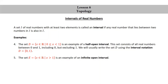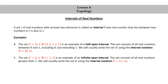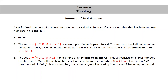The set E, consisting of real numbers x such that x > 1, is an example of an infinite open interval. This set consists of all real numbers greater than 1. We will usually write the set E using interval notation as (1, ∞) in parentheses. The symbol infinity is not a number, but rather a symbol indicating that the set E has no upper bound.